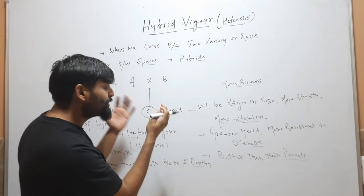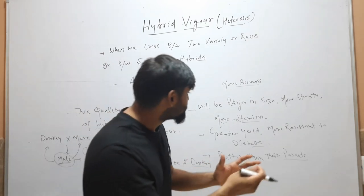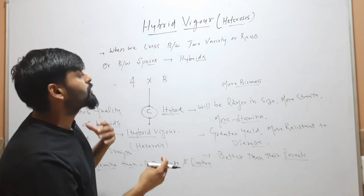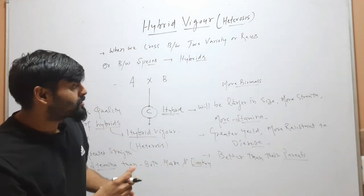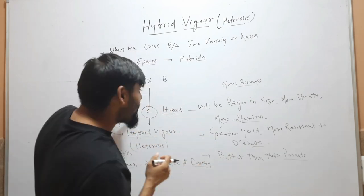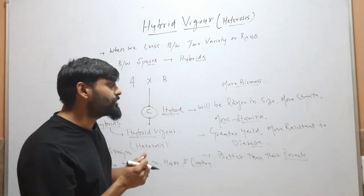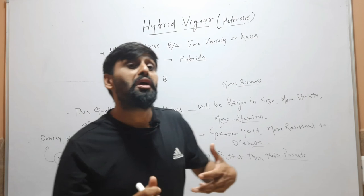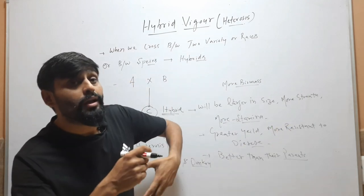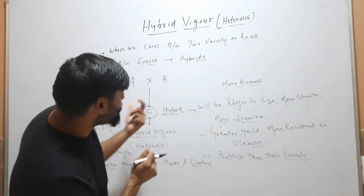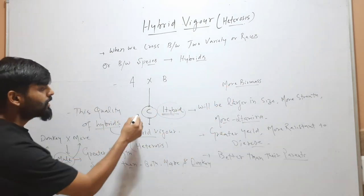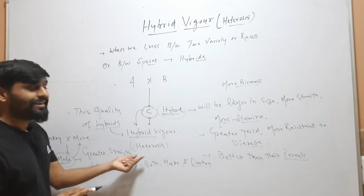When a hybrid between two races, varieties, or species has more stamina, greater size, or more strength than its parents — and in the case of plants, when it has greater yield, accumulates more biomass, or is larger in size than its parents — then this quality of the hybrid is called hybrid vigor or heterosis.